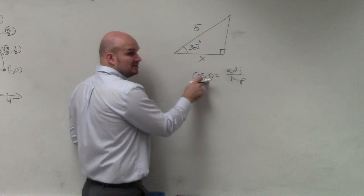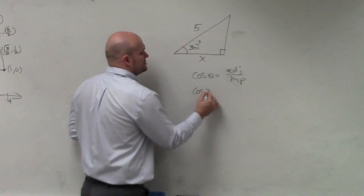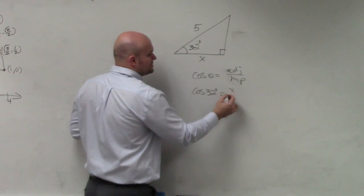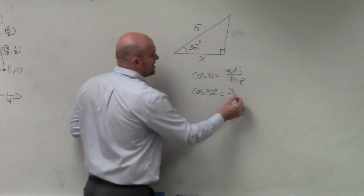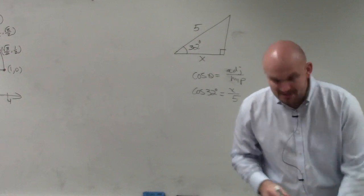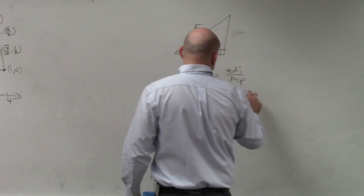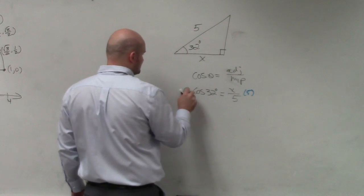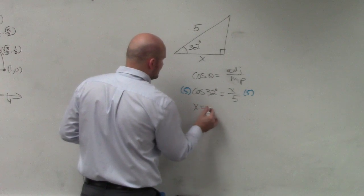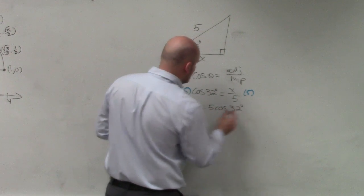However, do we have an angle in this case? Yes. Cosine of 32 degrees equals the adjacent side, which is x, over 5. All we need to do to solve for x is get the 5 off the denominator, so I'll multiply by 5 on both sides. And you have x is equal to 5 cosine of 32 degrees.